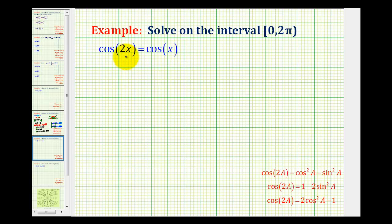We want to solve the trig equation cos(2x) = cos(x) on the interval from 0 to 2π, where the interval is closed on 0 and open on 2π, meaning it includes 0 radians but does not include 2π radians.